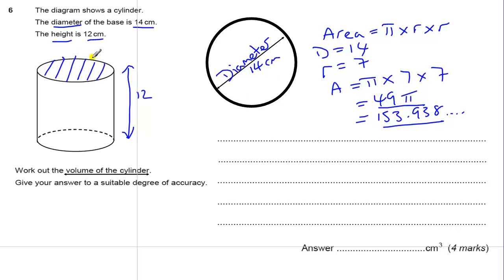So that's the area of the end, that's the cross-sectional area. We've got times that by 12, so we've got 49π times by 12, that would give us 588π or 1,847.2564.